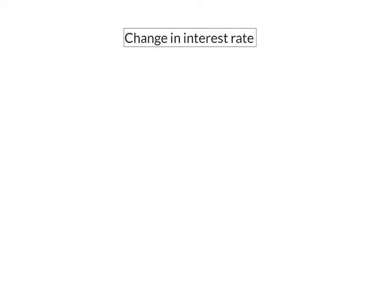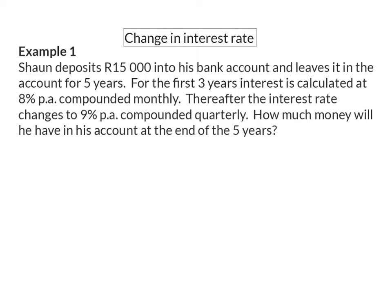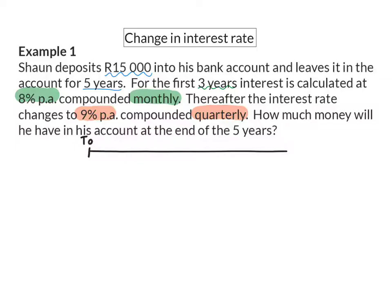The interest rate that an account receives can change over time. Example 1: Sean deposits 15,000 rand into a bank account and leaves it in the account for 5 years. For the first 3 years, interest is calculated at 8% per annum compounded monthly. Thereafter, the interest rate changes to 9% per annum compounded quarterly. How much money will you have in this account at the end of the 5 years? Because there are changes in this account over the 5 years, it helps if you represent it on a timeline. I'm going to choose to work with the timeline in years because we have years, months and quarters. So my timeline consists of 5 years.